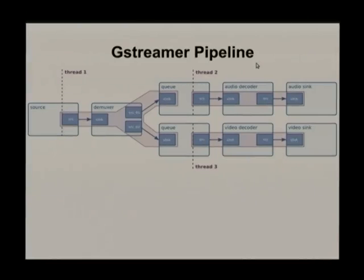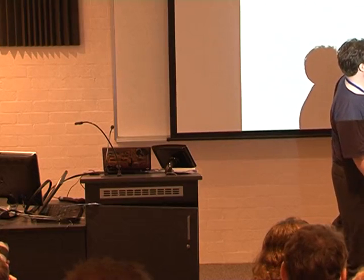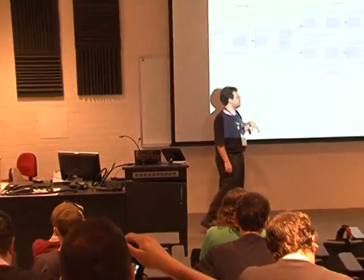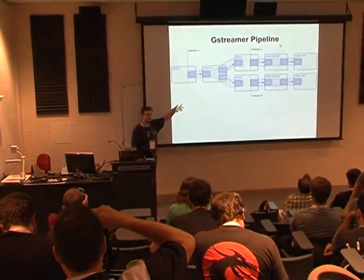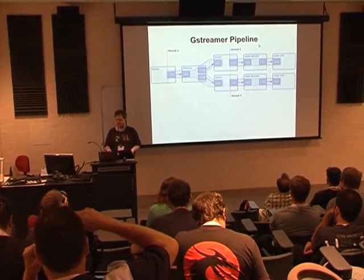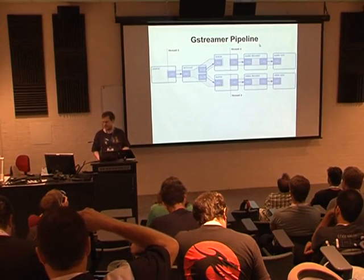So this is kind of an example of a GStreamer pipeline. Unlike text pipelines, you generally can have splits and joins because in multimedia it's multimedia, not single media. This is kind of a pipeline where you've got some code at the front that splits — you've got the audio at the top and the video at the bottom. Towards the end of the talk we'll be building a pipeline kind of like this, just on the command line. That's a pretty advanced pipeline.